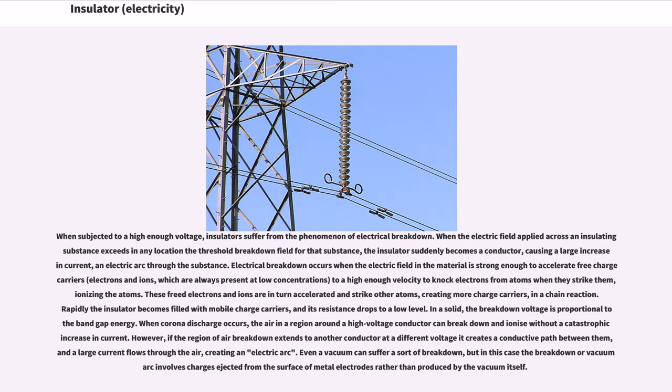However, if the region of air breakdown extends to another conductor at a different voltage, it creates a conductive path between them, and a large current flows through the air, creating an electric arc.